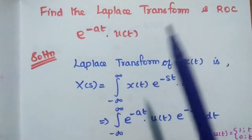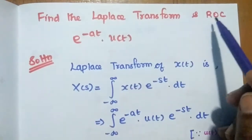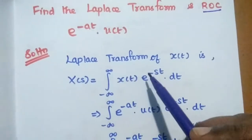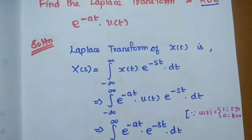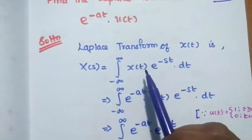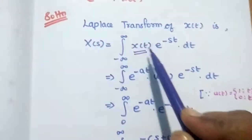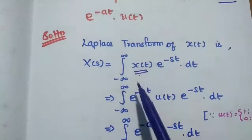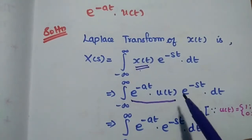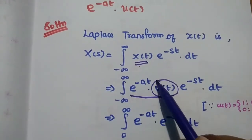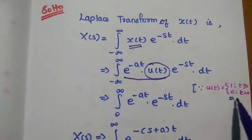The first problem is: find the Laplace transform and ROC of the given signal e^(−at)u(t). First we are going to find out the ROC and then the Laplace transform. We start with the formula X(s) = integral from −∞ to ∞ of X(t)e^(−st)dt. We replace X(t) with the given signal: e^(−at)u(t)e^(−st)dt. Since the problem has u(t), which equals 1 whenever t ≥ 0 and 0 whenever t < 0, we change the limit from 0 to infinity.